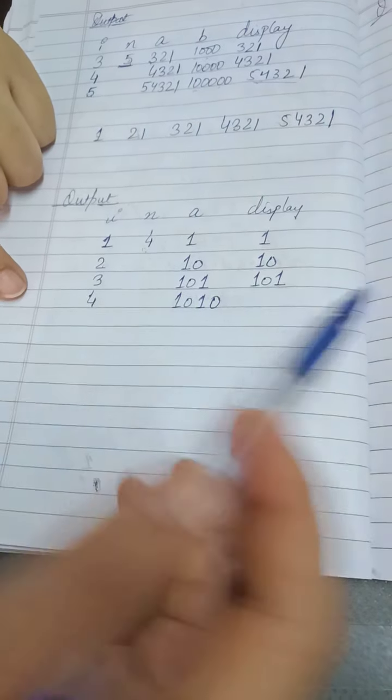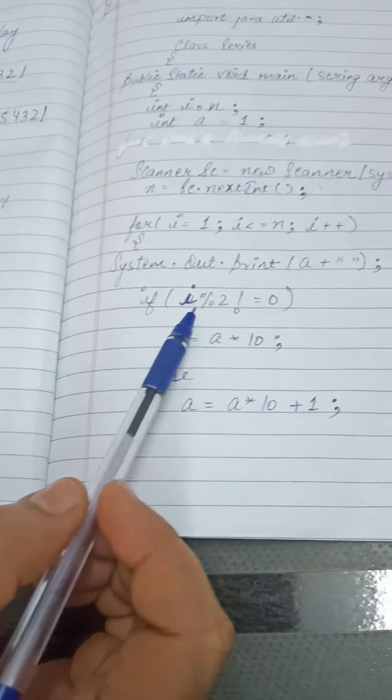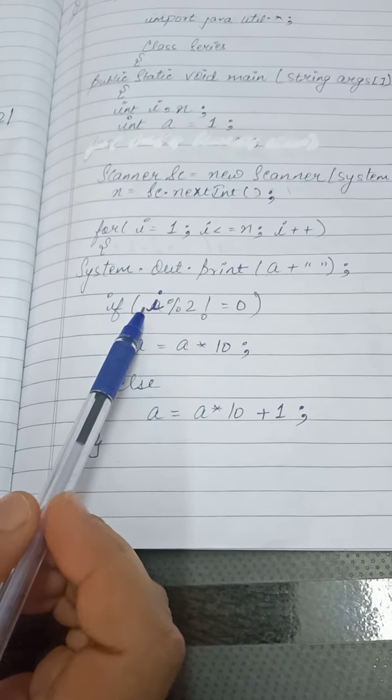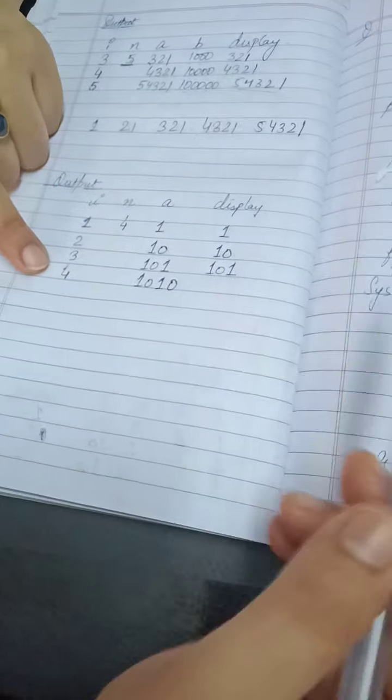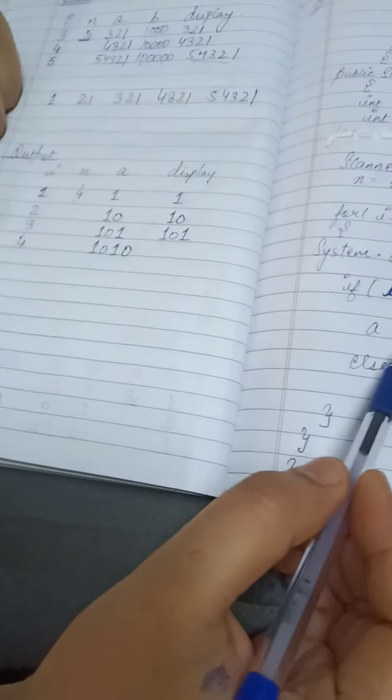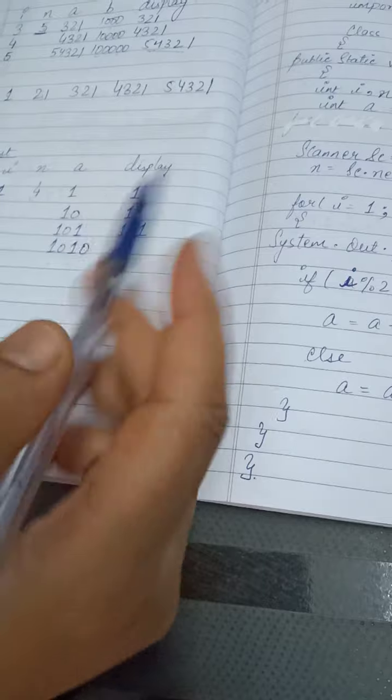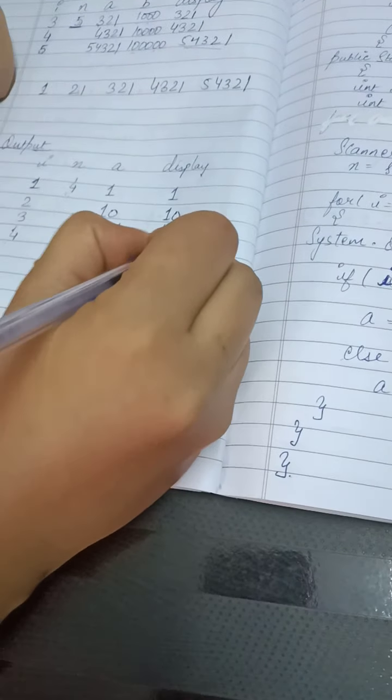Now when the i was 3, the condition was false. So it will become here a was 101. It will multiply by 10, it will become 1010. And it will display here 1010.